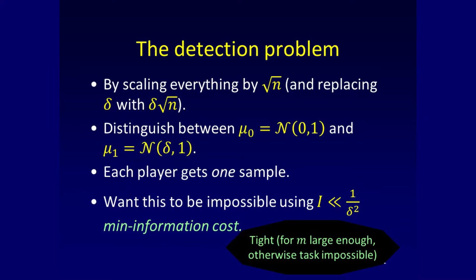If this were communication instead of information cost, this makes sense: you need roughly one over delta-squared samples to tell those two cases apart. For M large enough, if you just have the first one over delta-squared machines publish the signs of their samples and take the majority, you can solve it.